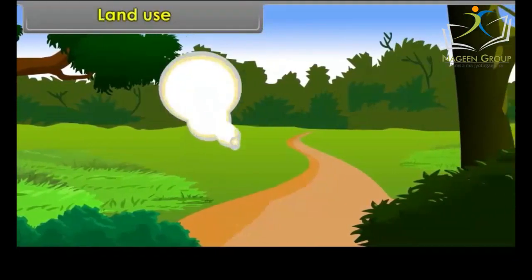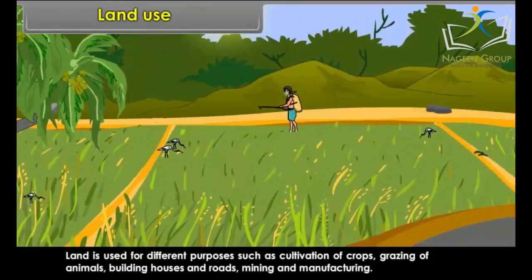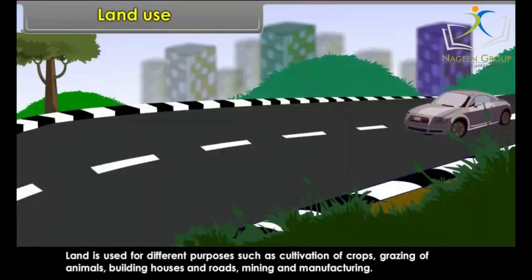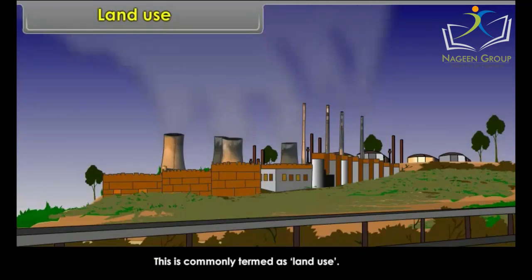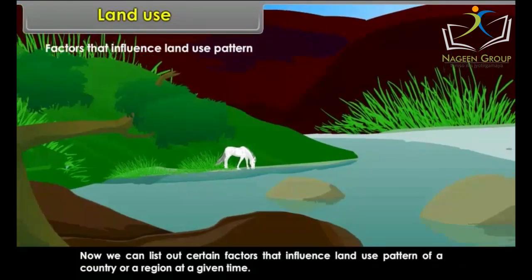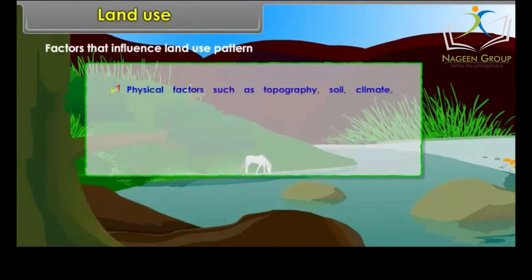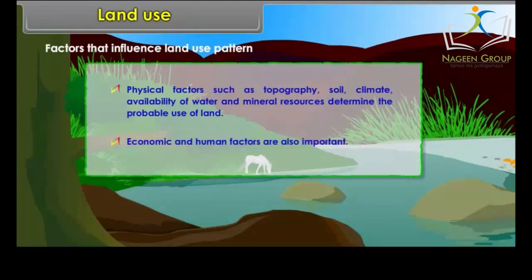Land Use: Land is used for different purposes such as cultivation of crops, grazing of animals, building houses and roads, mining and manufacturing. This is commonly termed as land use. Factors that influence land use patterns include physical factors such as topography, soil, climate, availability of water and mineral resources. Economic and human factors are also important.